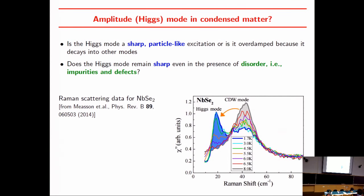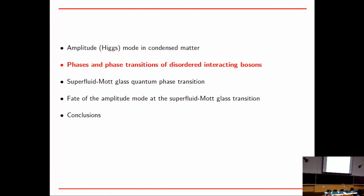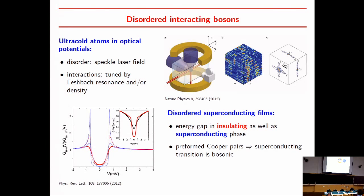There are some experimental results about the Higgs mode, though finding probes that couple to it is not entirely trivial — often you only have an indirect coupling. Now let's look at the types of systems I will consider: disordered interacting bosons. There are many potential experimental realizations. Cold atoms in traps with added disorder is one clear way. Another, historically the oldest, is superconducting thin films, where in some cases there is an energy gap on both sides of the transition, suggesting the physics is bosonic and can be described in terms of phase fluctuations of Cooper pairs.